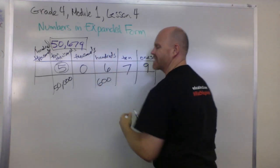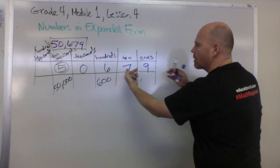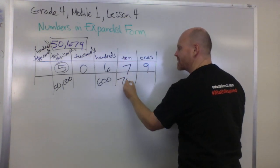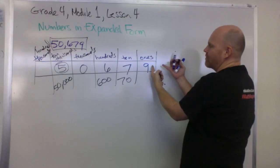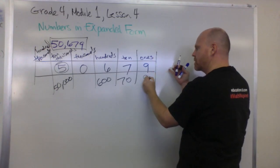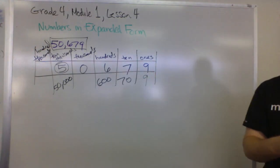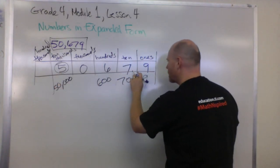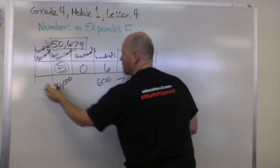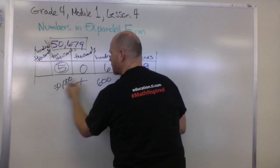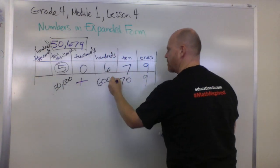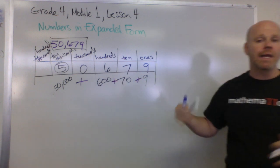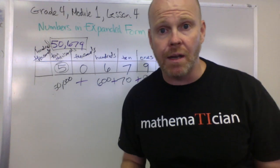Here we have seven copies of the tens, so that means we have 70. And here we have nine copies of the ones, which is just nine. So in expanded form, we would erase these columns here because we don't need them. We're going to put in the plus symbol. So this becomes 50,000 plus 600 plus 70 plus nine, and that's our expanded form.